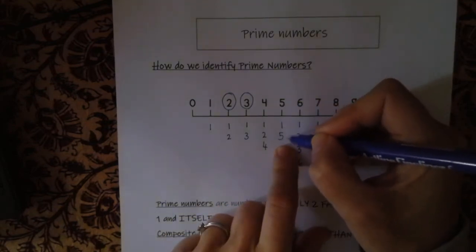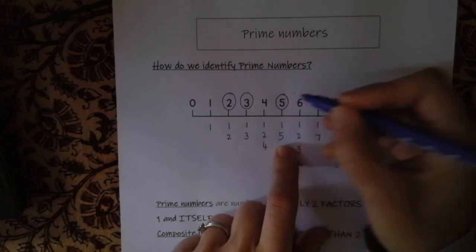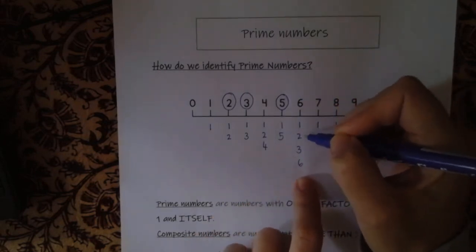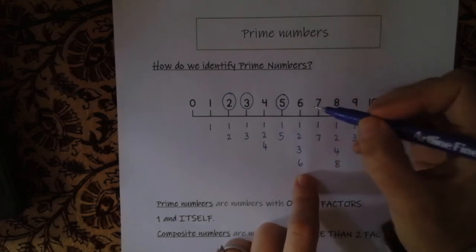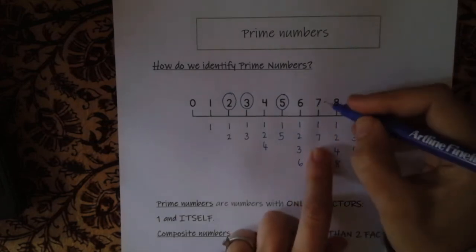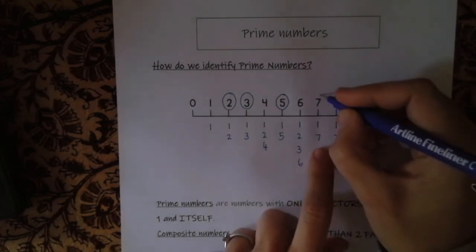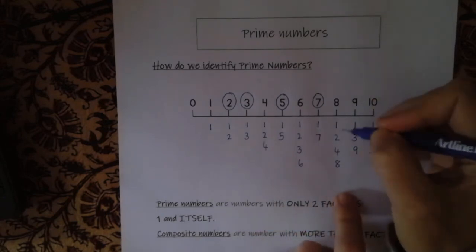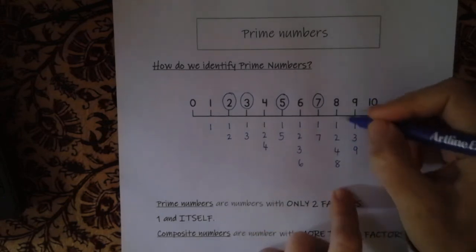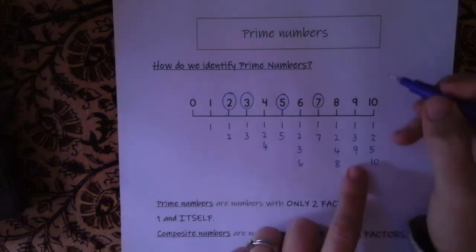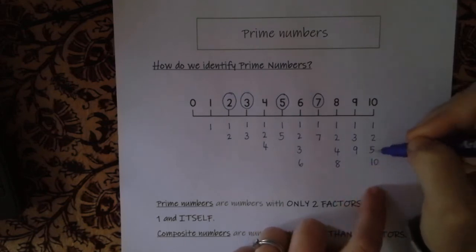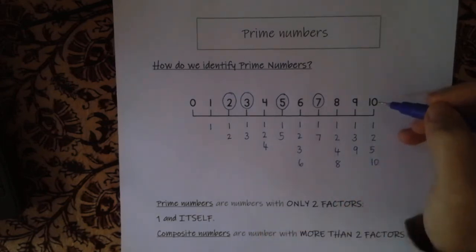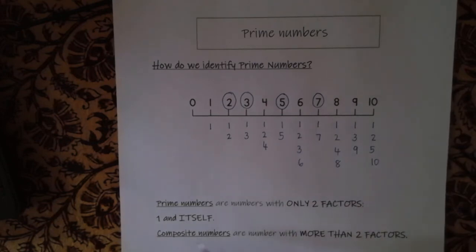Five has one and five — one and itself — so five is also a prime number. Six has four factors, so six is a composite number. Seven has one and itself, so seven is also a prime number. Eight has one, two, four, and eight — composite number. Nine has three factors — composite number. Ten has four factors — composite number.